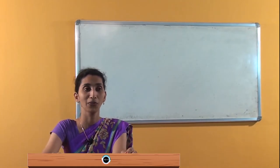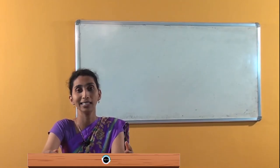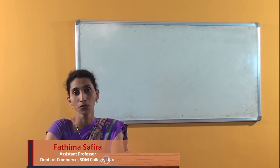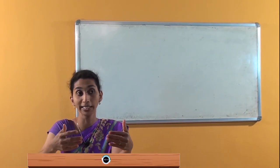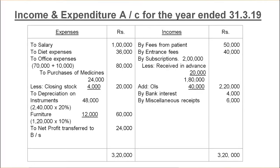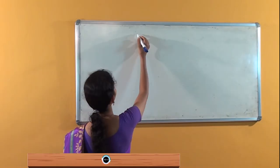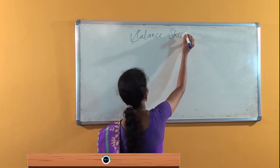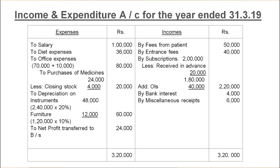Hi students, welcome to this session. In the last session we were working on a problem on accounting for professionals. Today we are continuing with that problem. We have completed the income and expenditure account, which had a net profit of 24,000. Now I will be moving to the balance sheet as on 31st March 2019.